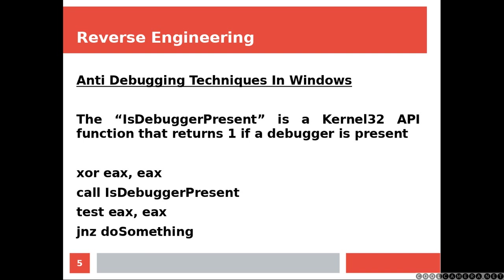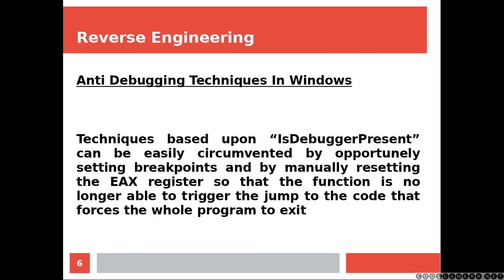On Windows, isDebuggerPresent is a kernel32 API function that returns 1 if a debugger is present. Techniques based upon isDebuggerPresent can be easily circumvented by opportunely setting breakpoints and by manually resetting the EAX so that the function is no longer able to trigger the jump to the code that forces the whole program to exit.